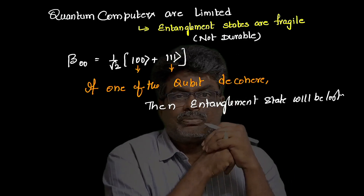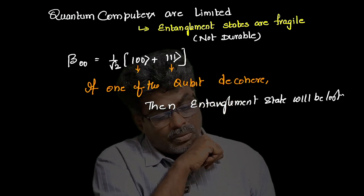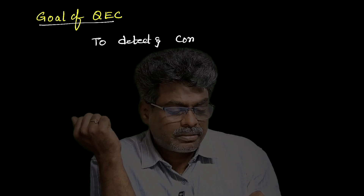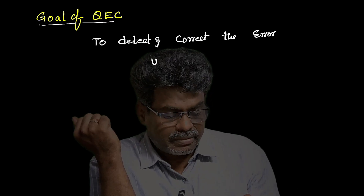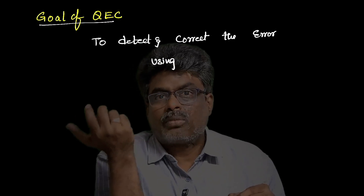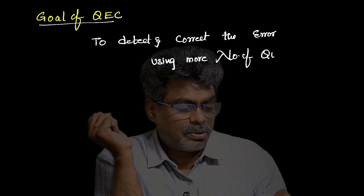This is the major issue. So what is the goal of quantum error correction? The goal is to detect the error and correct the error by using a greater number of qubits.